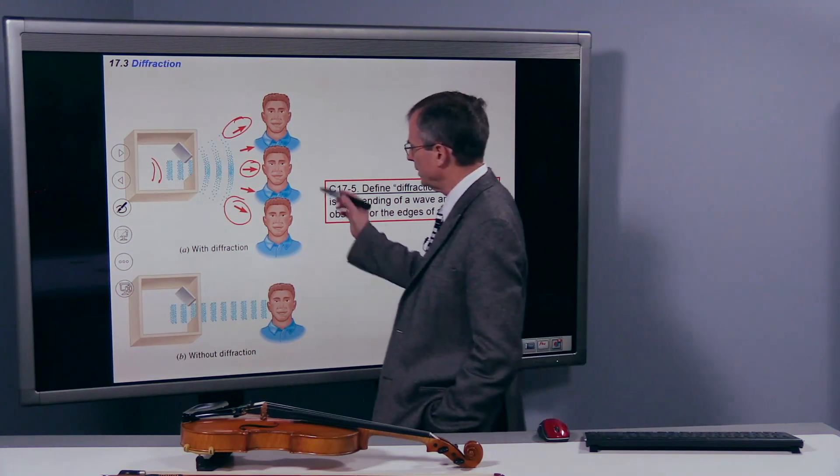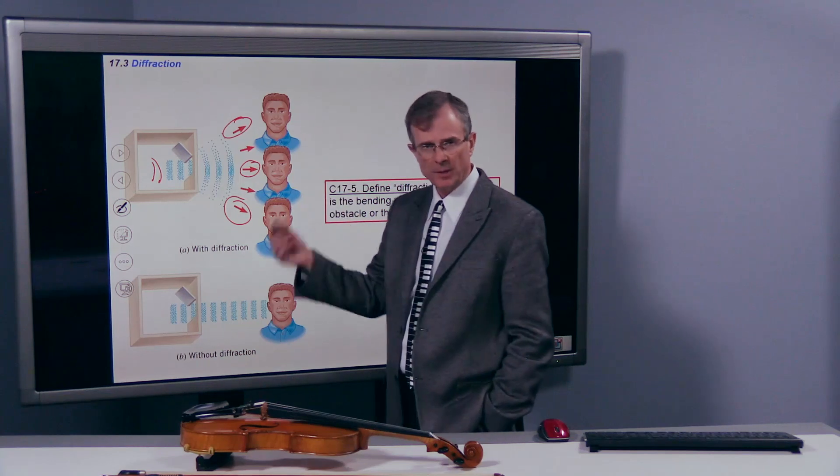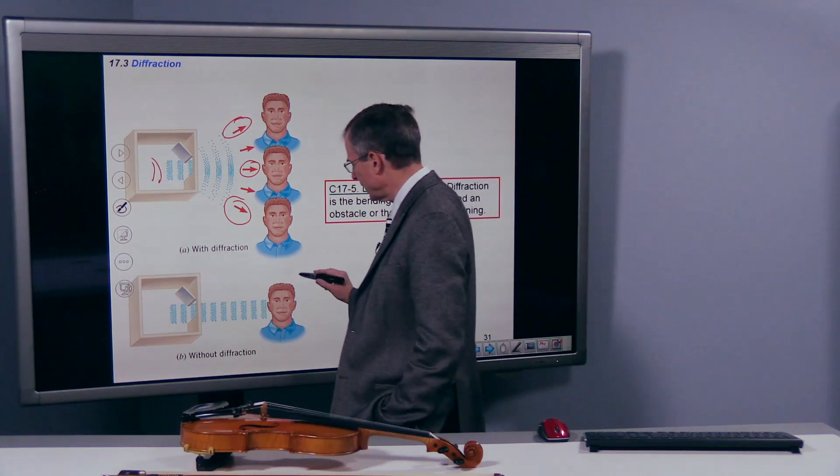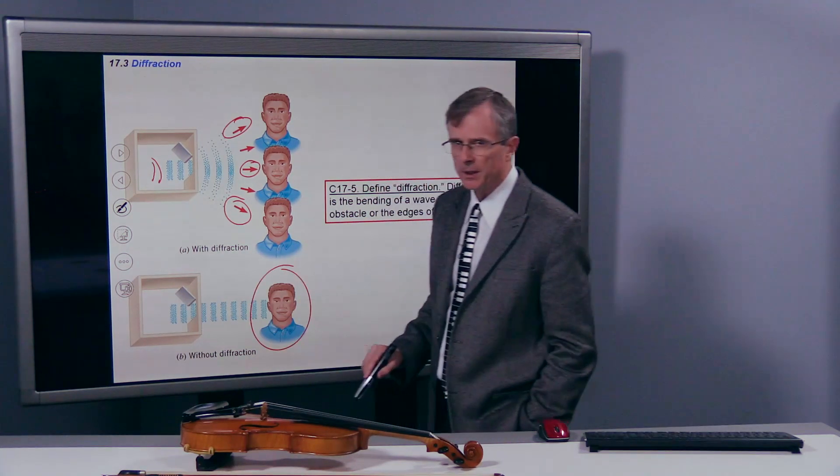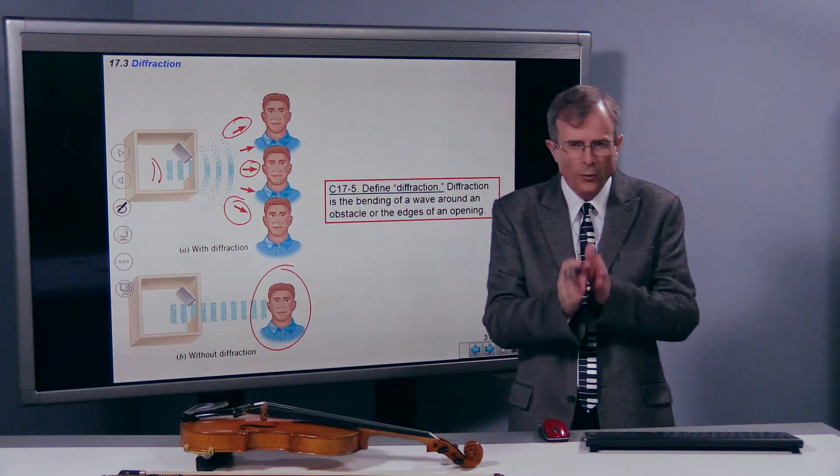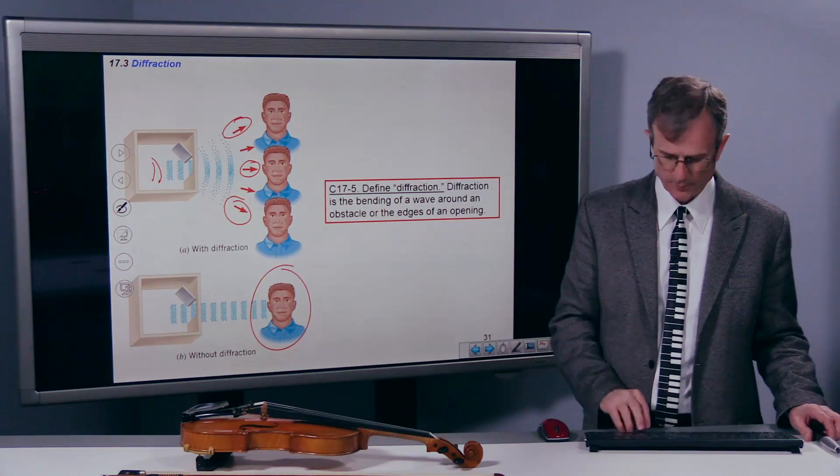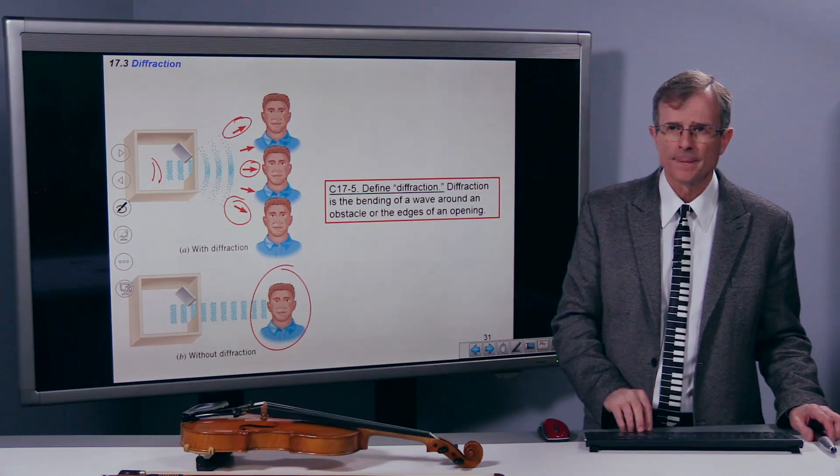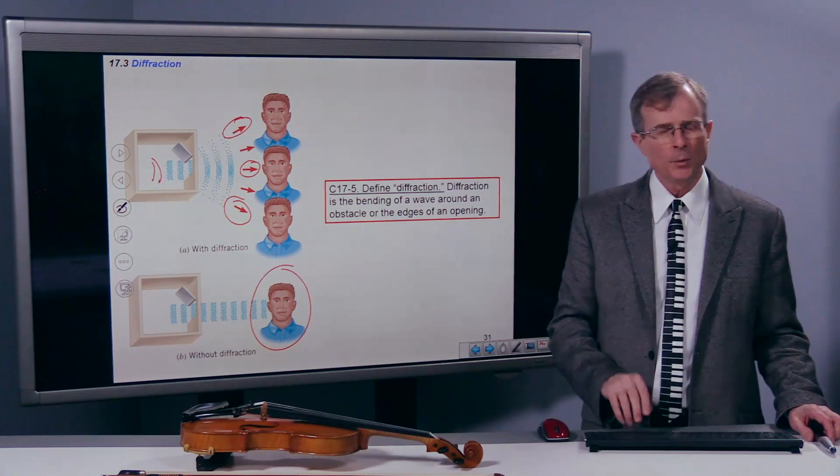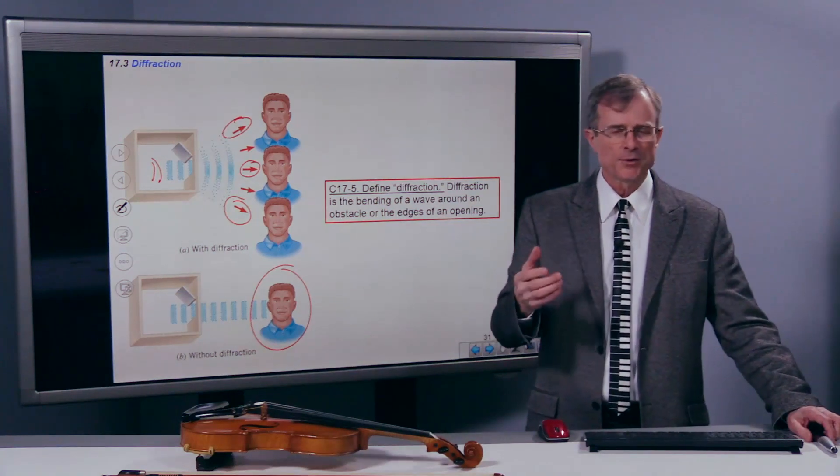So it's this bending of these waves that is important here. With diffraction, you get this bending of the waves through that obstacle. Without diffraction, you could only hear that sound if you were directly in front of that doorway. So it's the bending. If you want to think of one word, diffraction is bending.